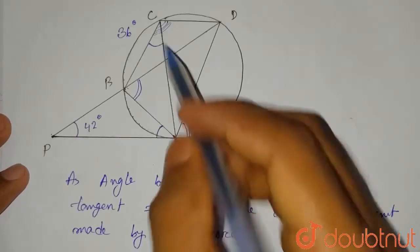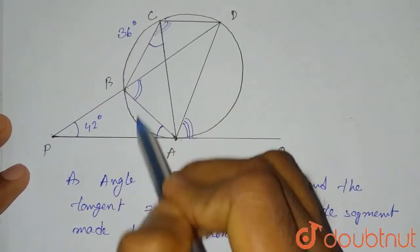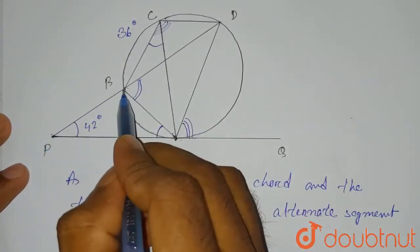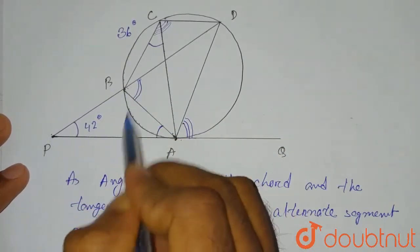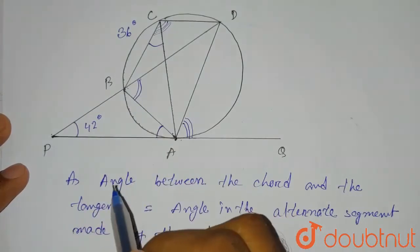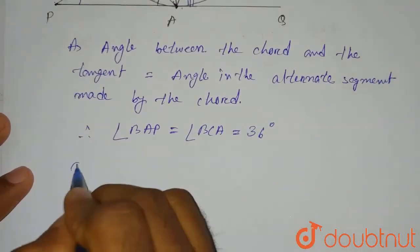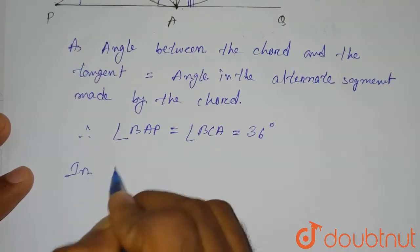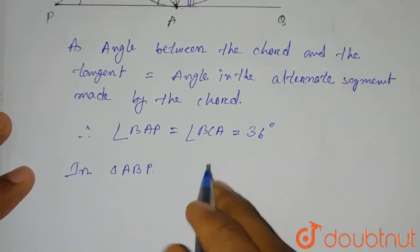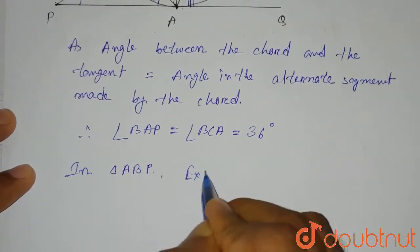Secondly, we have to find angle ABD — that means this angle. As we can see, in triangle BAP, this is the external angle, so it will be equal to the sum of the two internal opposite angles. We can write: in triangle ABP, the external angle ABD...